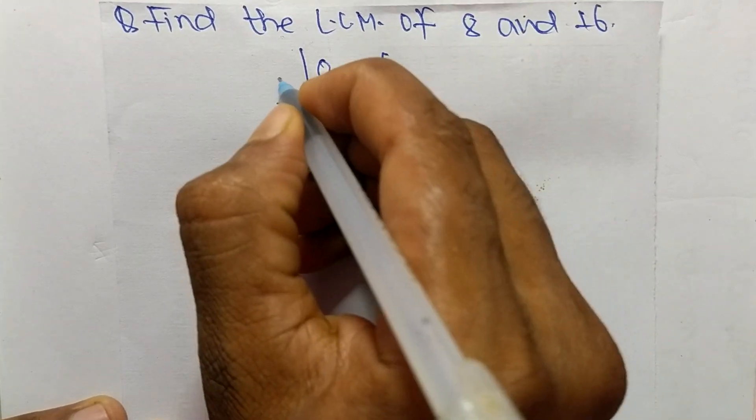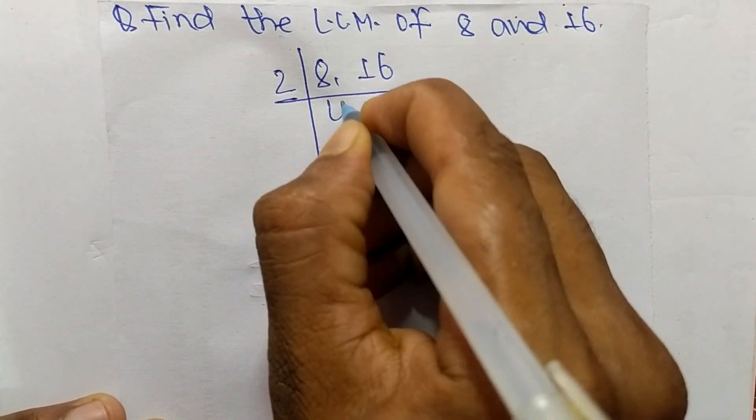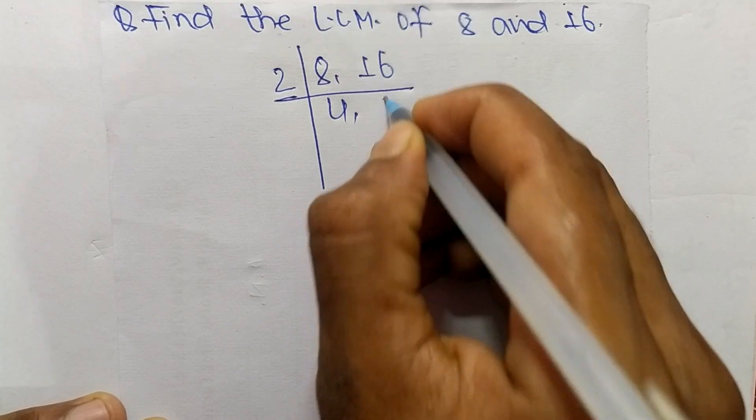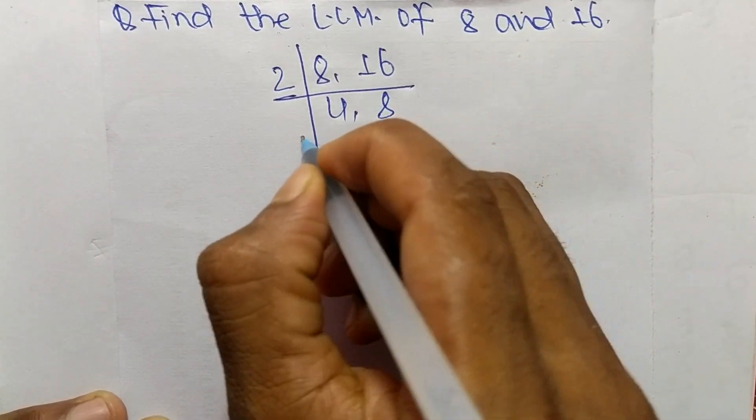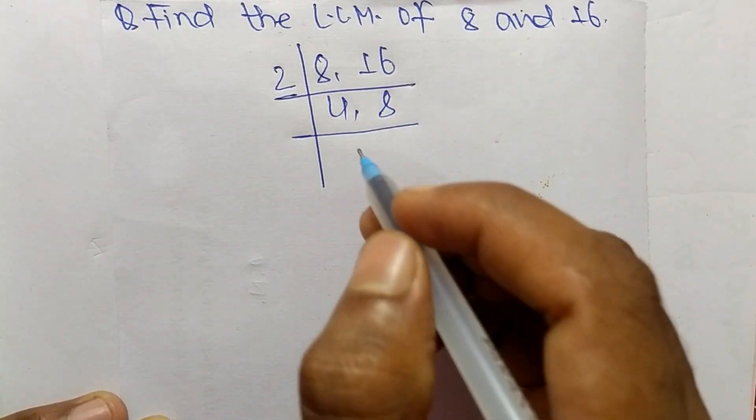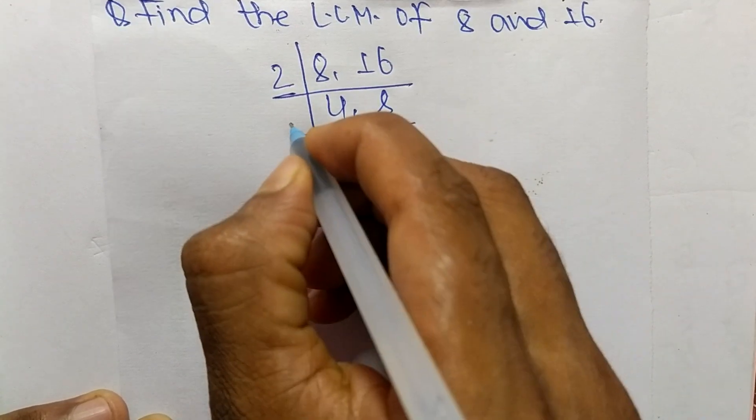So the number is 2. So it is 2 times 4 means 8 and 2 times 8 means 16. Now 2 can also divide both numbers.